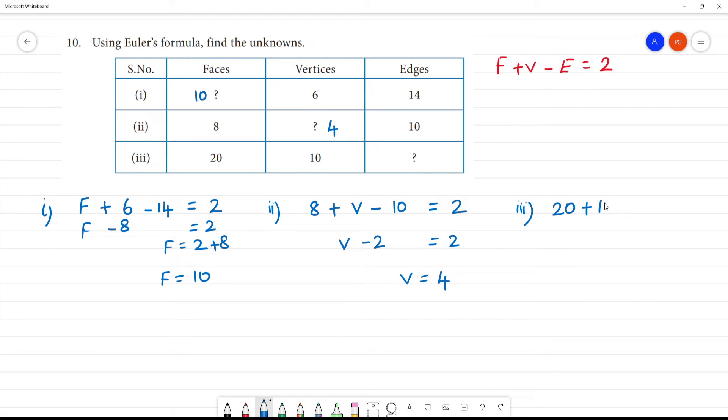So 20 plus 10 is equal to 30 minus E is equal to 2. So 30 minus E is equal to 2. 30 minus 2 is E, so E is 28. So what is the edge? Edge is equal to 28. Clear?